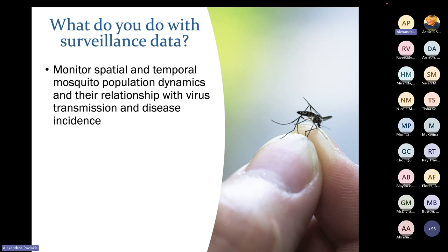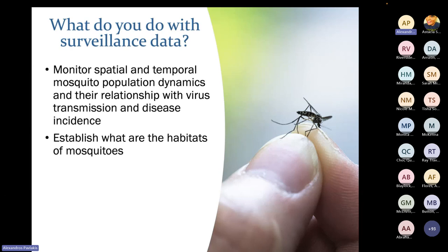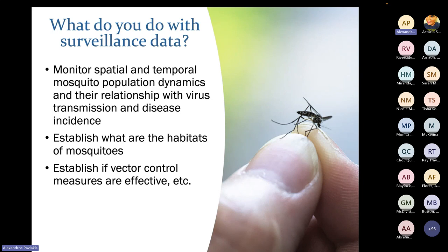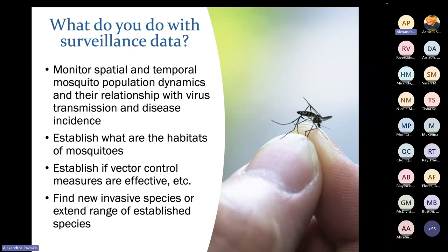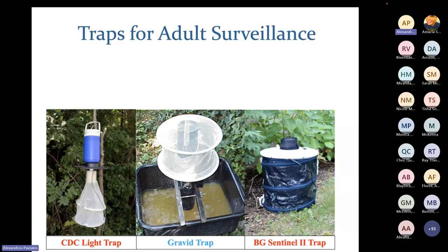With surveillance data, we can monitor the spatial and temporal mosquito population dynamics and their relationship with virus transmission and disease incidence. We can establish where mosquito habitats are, evaluate whether our abatement measures are working, and find new and invasive species or detect range extensions of established species. Detecting new species is really important for mosquitoes that could be potential vectors of diseases not currently present in our parish.